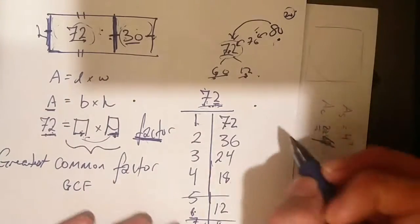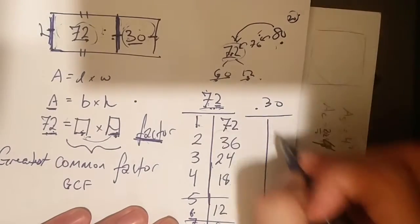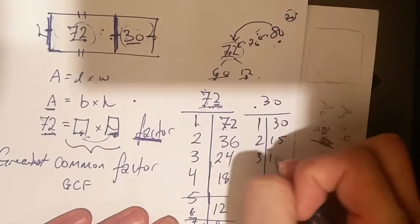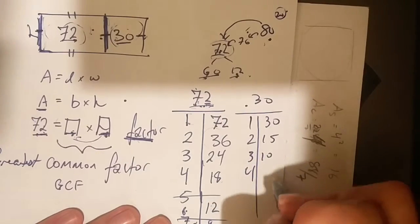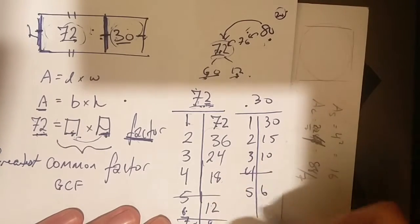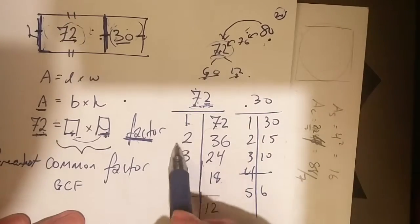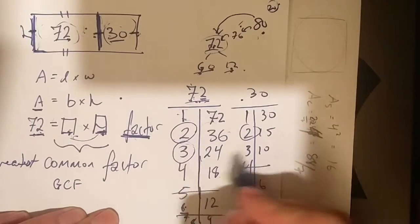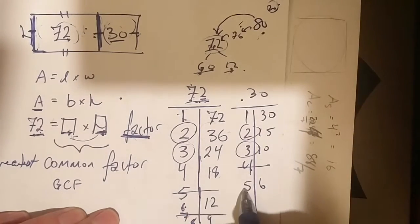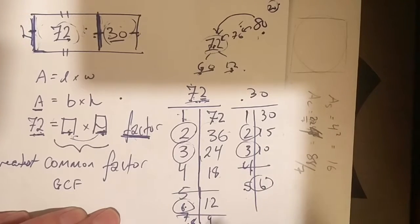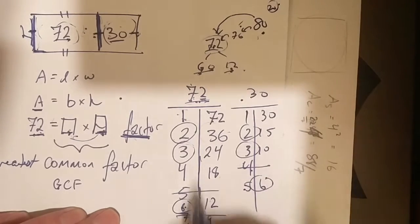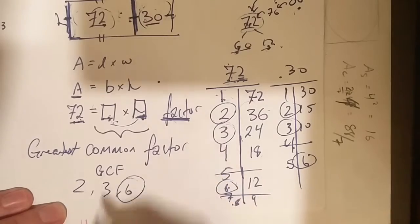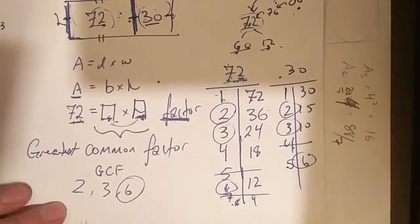Well I have all my factors for 72, let's get my factors for 30. So I have 1 and 30, I have 2 and 15, I have 3 and 10, 4 doesn't work, I have 5 and 6, and that's all of them. So my common factors: what are all my common factors? 1, well of course we don't count that. I have 2 is a common factor, 3 is a common factor, 4 nope, 5 nope, 6 is a common factor, 8 nope, 9 nope, 10 nope. So my common factors are 2, 3, and 6. My greatest common factor of course is 6.